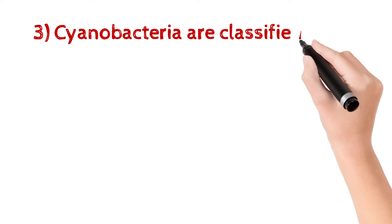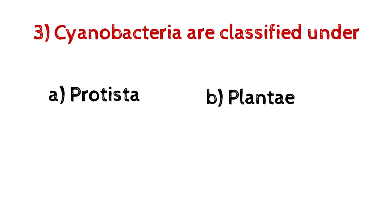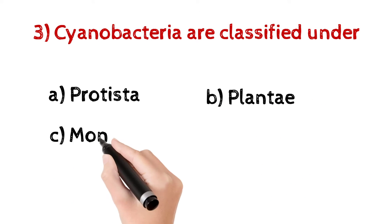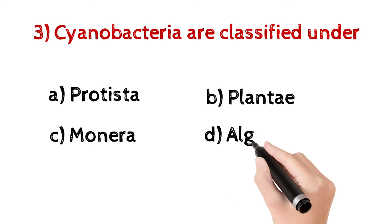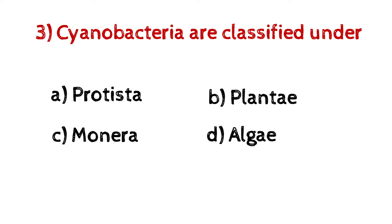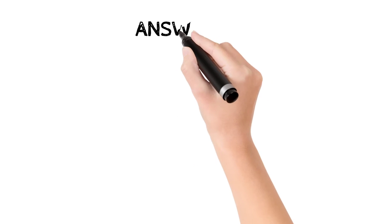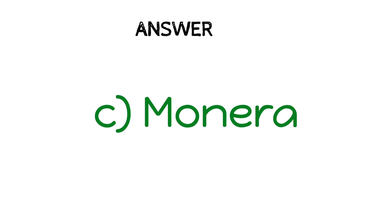Question number three: cyanobacteria are classified under — A) Protista, B) Plantae, C) Monera, D) Algae. And the answer is C) Monera. Cyanobacteria are classified under Monera.